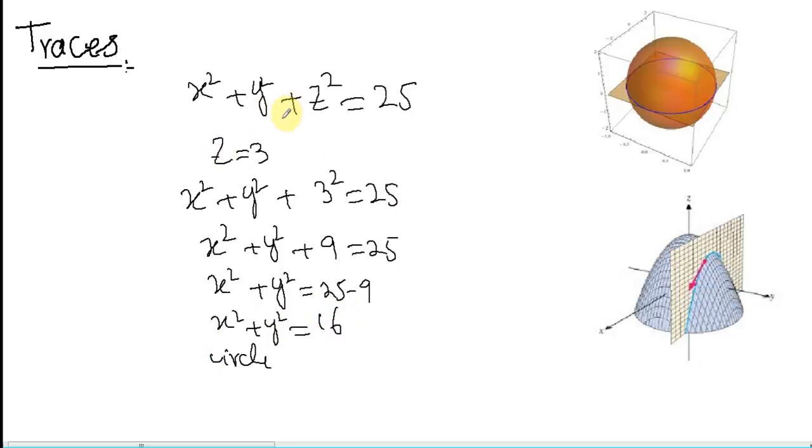X square plus Y square plus Z square equal to 25 is a sphere. We have the intersection of a plane Z equal to 3. The result is a circle x square plus y square equal to 16. This is the trace of x square plus y square plus z square equal to 25 at z equal to 3.